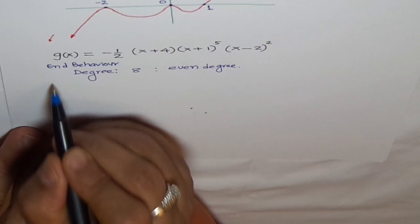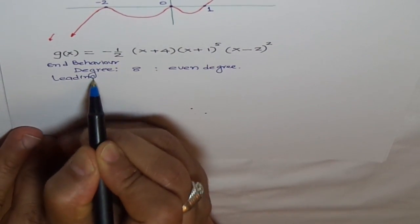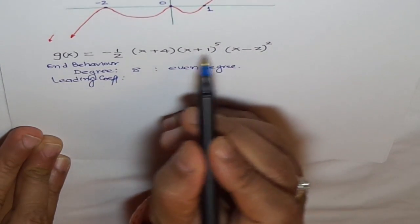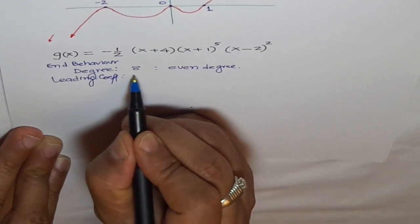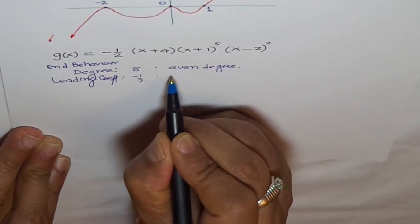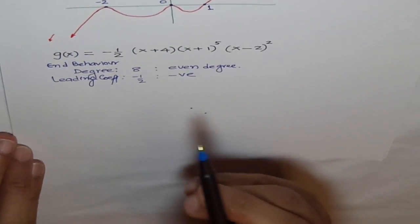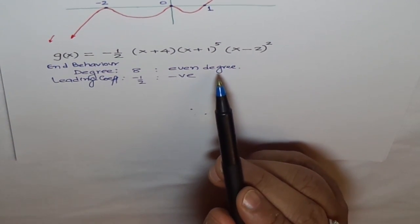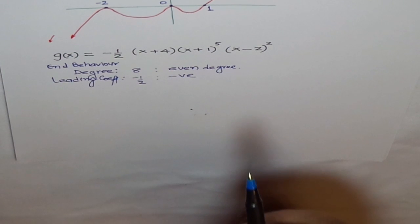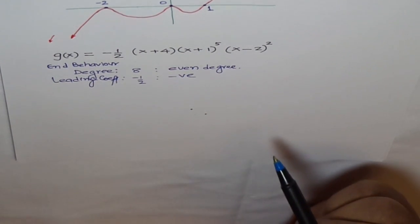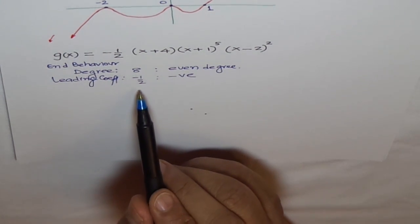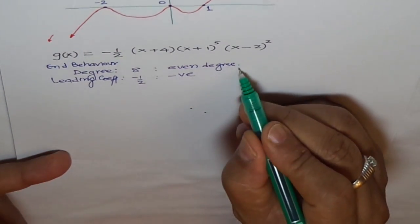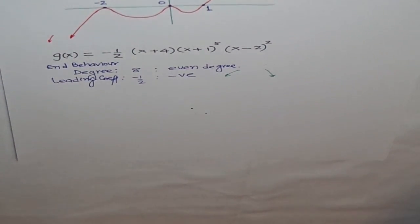Second, leading coefficient. What is the leading coefficient? These factors are 1, so when they get multiplied with this, we get minus half. So leading coefficient is negative. Now, if we have an even degree function, that means both sides are in the same direction, either both up or down. Leading coefficient will decide whether they are up or down. Leading coefficient is negative, meaning they are down. So the behavior is like this.